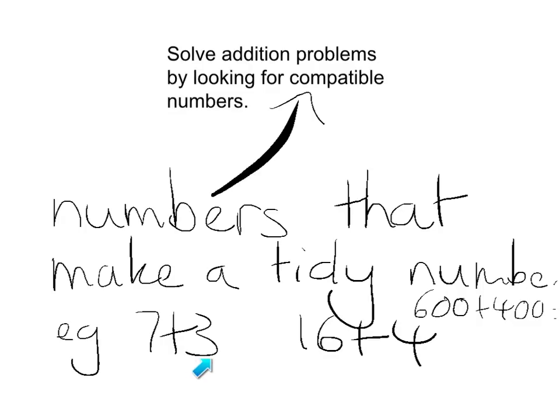For example, 7 plus 3 these two are compatible because they fit together to make 10. 16 plus 4, similar thing, they fit together to make a nice tidy number in 20. 600 plus 400. So using the strategy we're going to be looking for numbers that are compatible that we can put together to make tidy numbers.